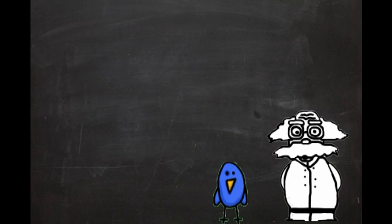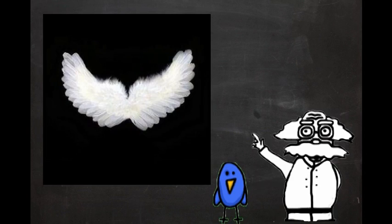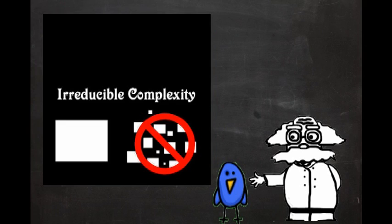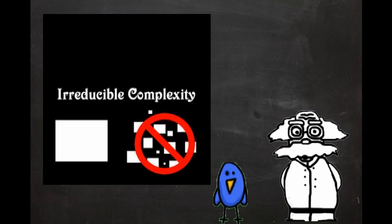The first concept of irreducible complexity. It means there are some parts, like wings and eyes, that are so complex that if any piece were missing, the part would be non-functional, and therefore must have been designed the way it currently is.